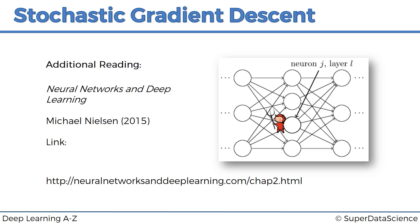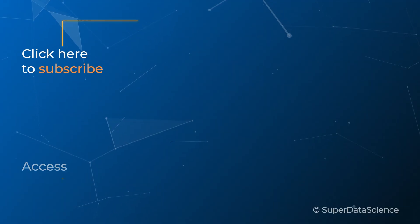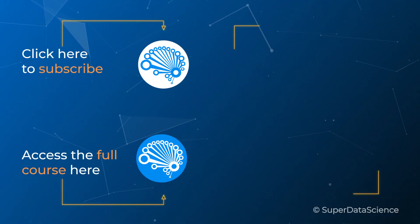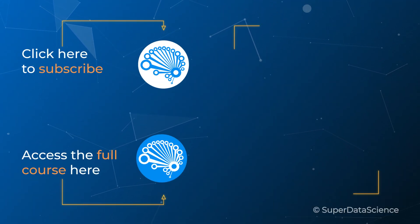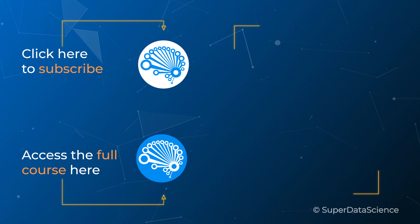And there we go — that's in a nutshell the difference between gradient descent and stochastic gradient descent and how the two work. Make sure to check out the videos on the right or the full course in the description to continue your learning. I look forward to seeing you there.